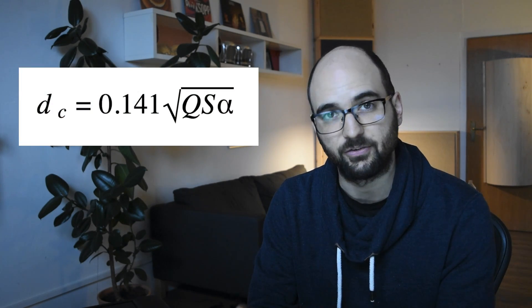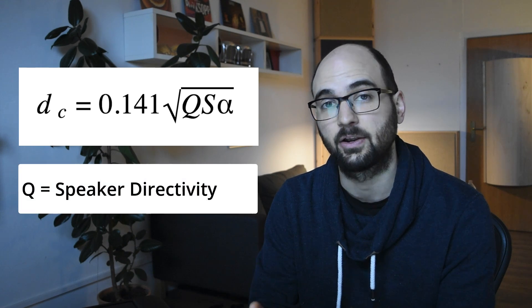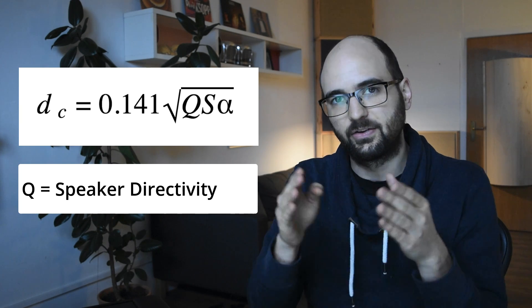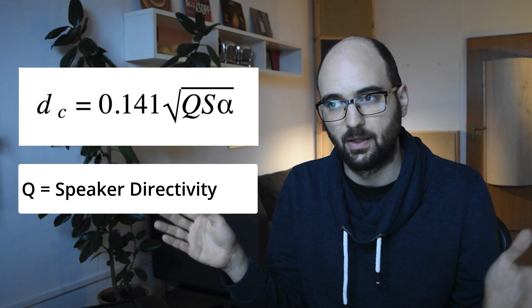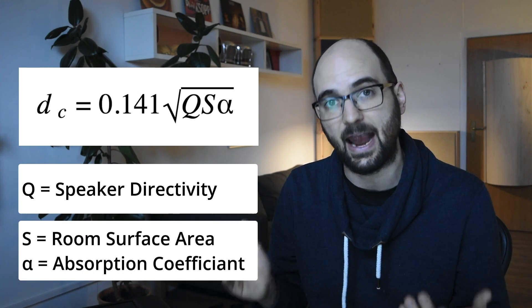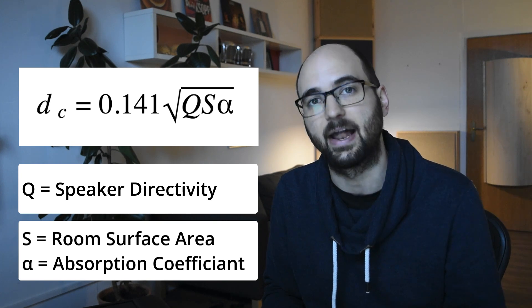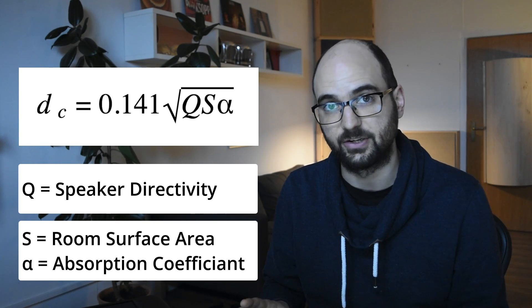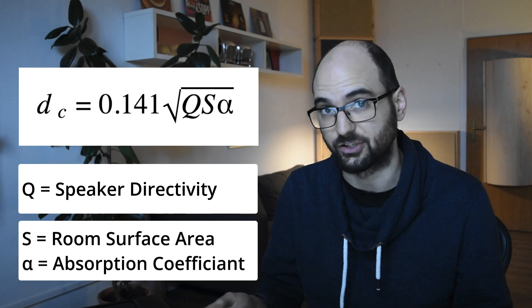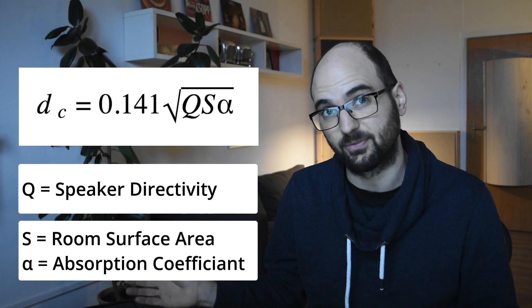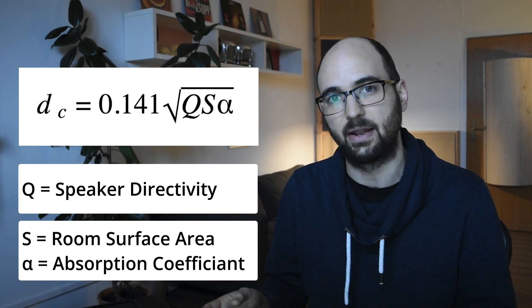The critical distance is actually really well defined and can be described by an equation. There are a couple of interesting variables in here. The first one is Q, which is the directivity — the dispersion pattern — of your speakers. The second variable is S, which is the surface area of the room, and alpha, the average absorption coefficient of that area. The thing is, nowhere in this equation is there a variable for sound pressure. The critical distance — the relationship between the direct sound and the response from your room — is completely independent of volume.